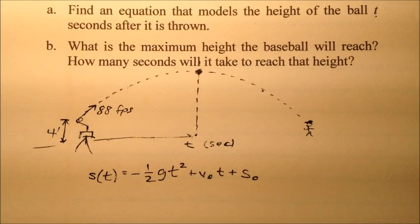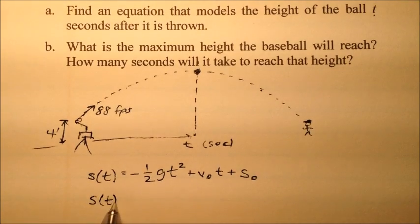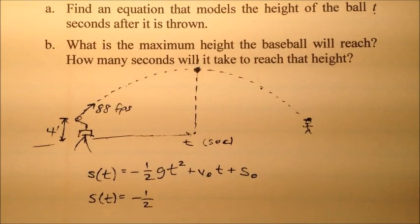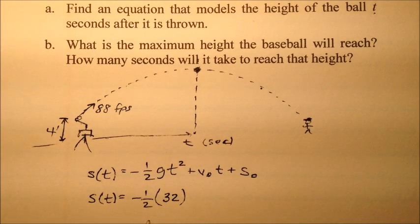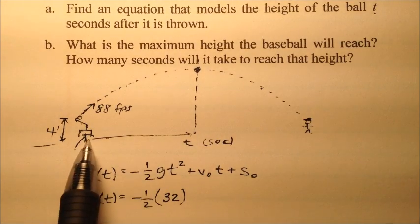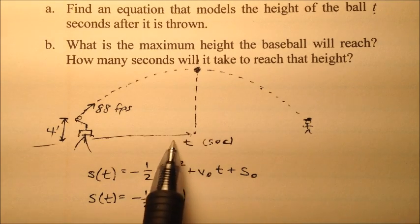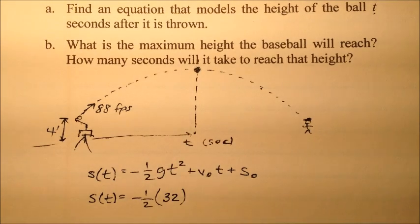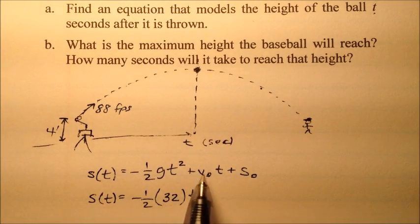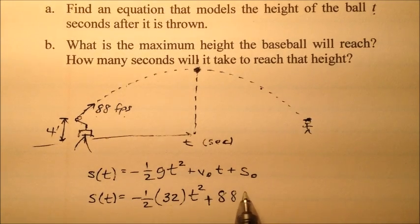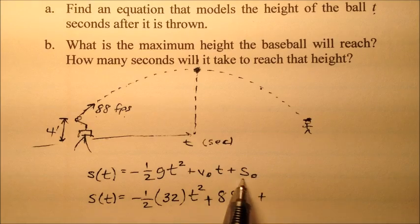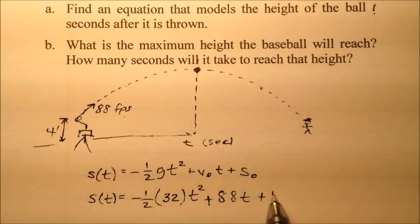The values we can put in: negative one-half times gravity, which is 32 because we're using feet per second. So -½(32)t², plus v₀, our initial velocity of 88 feet per second, so plus 88t, plus our initial position of 4 feet above the ground, so plus 4.